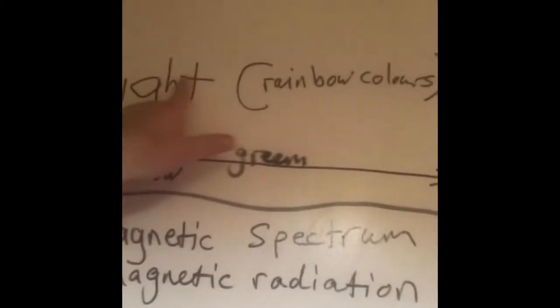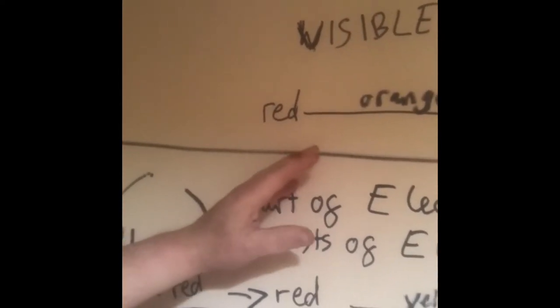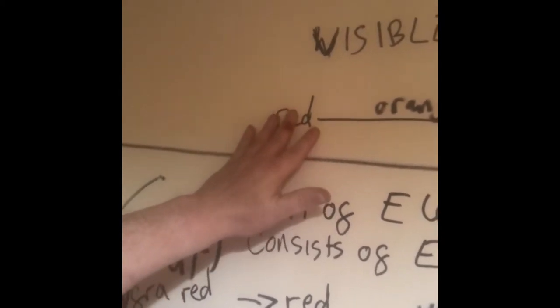Visible light goes from what we can see, which is one end, the red light, going through orange light, then yellow light, then green light, then blue light, then violet light. And as you can see on my wall here, visible light are all the rainbow colors, which is seen in white light. And if you pass it through the atmosphere and there's moisture, it acts like a prism because of the water molecules.